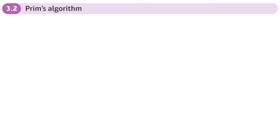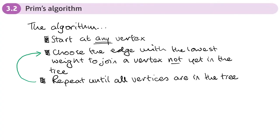This is the second section of chapter 3 on algorithms and graphs, and this section is on Prim's algorithm. So this is the algorithm: you can start at any vertex; you don't have to put anything in order like